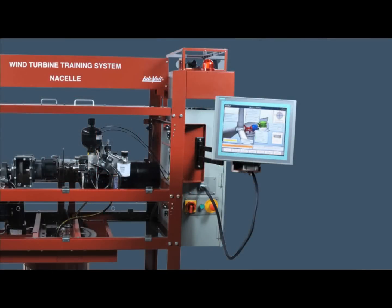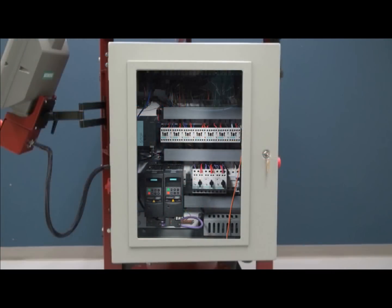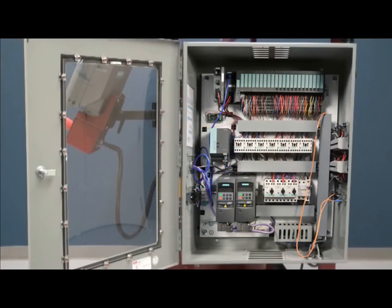The whole nacelle training system is controlled through a PLC which resides in this industrial computer, which is also a touch screen panel. This PLC is a Siemens PLC that will communicate through industrial networks like Profibus and Profinet to the components inside the electrical panel. You can see that the electrical panel has see-through glass so the students can view the components inside. You can also open the electrical panel.